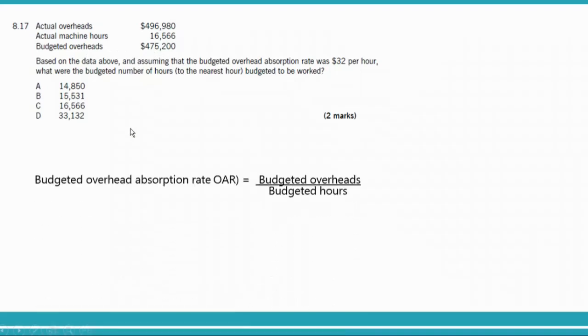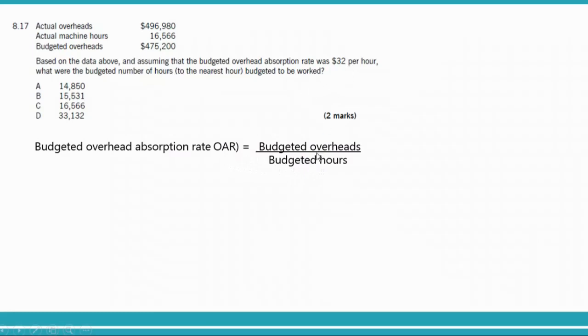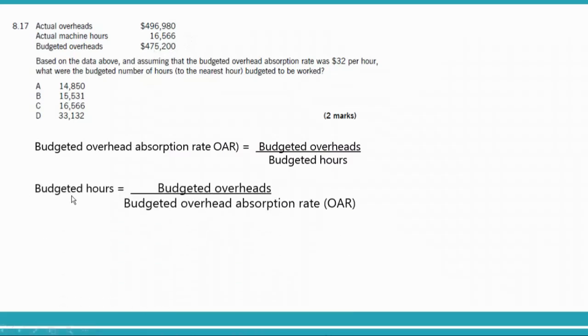The OAR formula is: OAR equals budgeted overheads divided by budgeted hours. Here OAR is $32 and budgeted overheads are $475,000. Rearranging: budgeted hours equals $475,000 divided by $32, which gives 14,850 hours. So the company planned for 14,850 hours. The answer is option A.